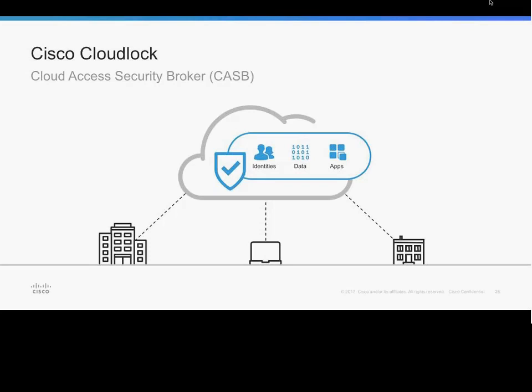This is where Cisco CloudLock comes in - Cisco's solution for these challenges. It's part of the Cloud Access Security Market, or CASB, which is Gartner's term for this technology market space. CloudLock was formed around 2010 and was a pioneer of the CASB market, particularly around the API approach to CASB. There's no hardware and no agents. Deploying CloudLock is very quick and easy - you literally hook into the APIs of the application you're protecting and you're up and running.